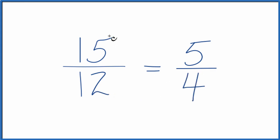So we can simplify 15 twelfths down to 5 fourths. And these have the same value. You divide 15 by 12 or 5 by 4, you'll get the same number.